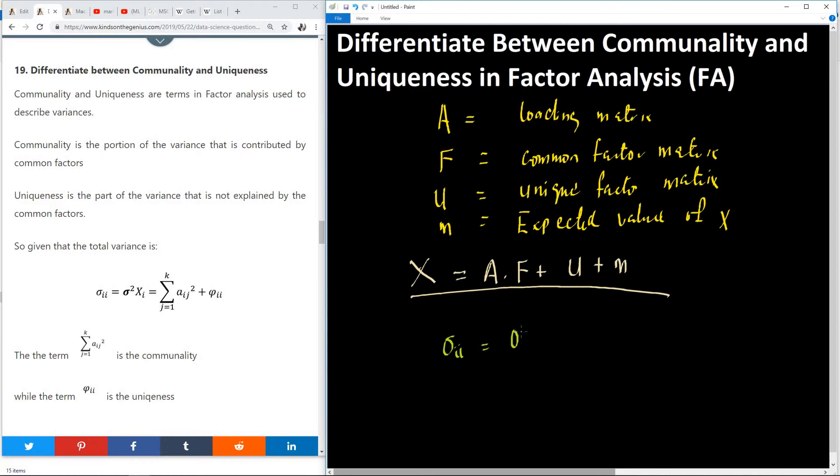The total variance in our data is σii equals the variance caused by xi, which is the summation from j equals 1 to k of aij squared plus φii. In this equation of total variance we have this first term.